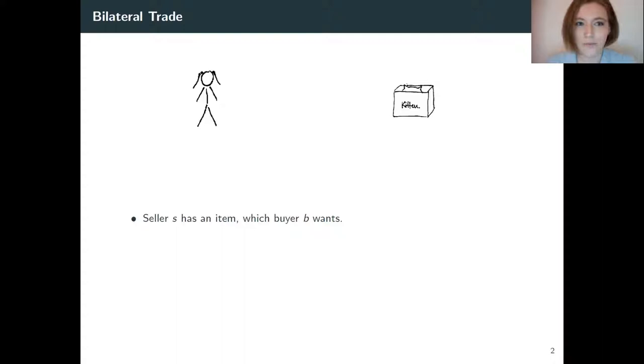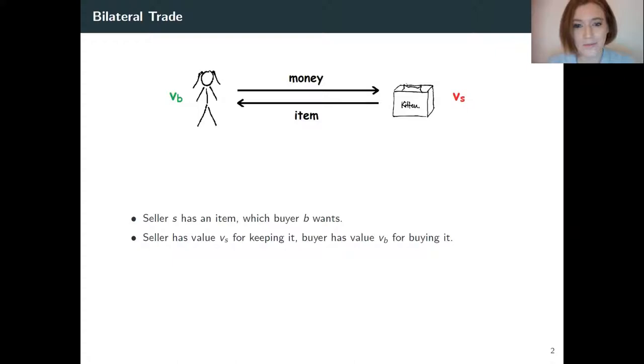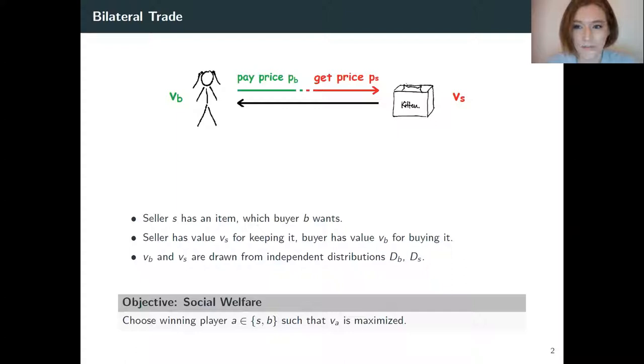Let's jump right in and see the type of problem we are dealing with. We are working on bilateral trade, where a seller has an item and a buyer is looking to buy this. Both of these agents are assumed to have values for keeping the item, and the values are in turn assumed to be drawn from independent distributions DB and DS. We would like to collect some money from the buyer and give some money to the seller, and then the item might change its owner. We want to conduct these trades in a fashion that maximizes the social welfare, which in this case is simply the value of the person that holds the item in the end.